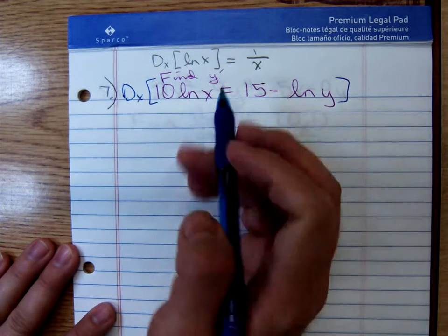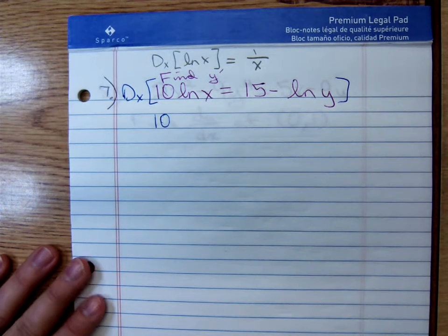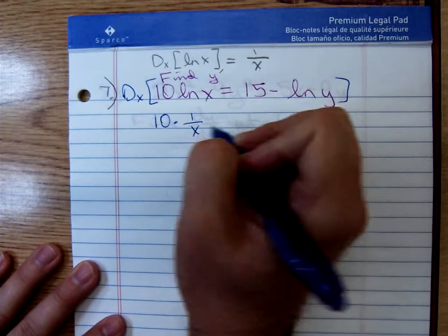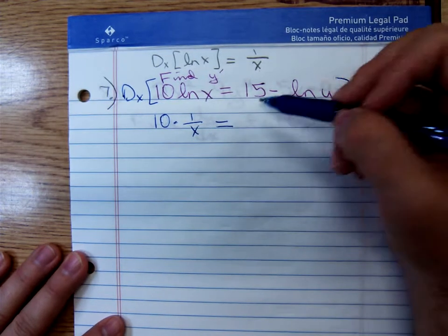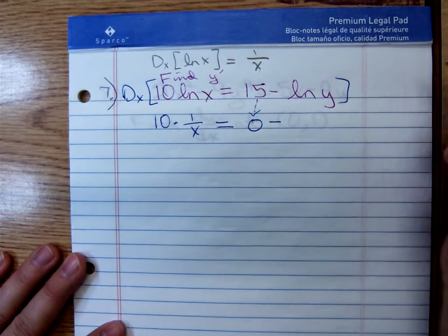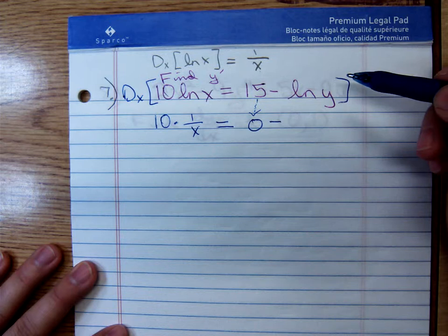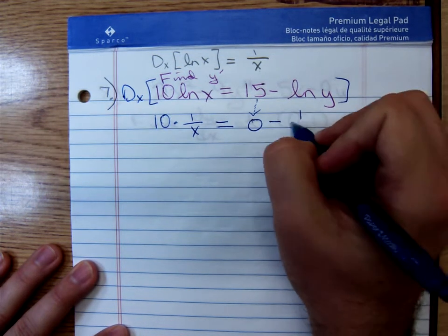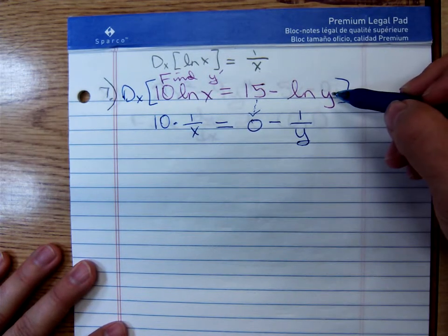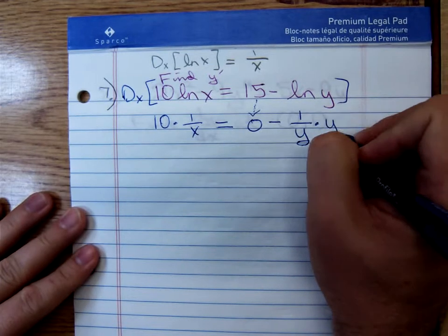So, the derivative of 10 lnx. You just bring down the 10, the way we did when we were differentiating natural logarithmic functions. Multiply it by the derivative of lnx. And the derivative of lnx is just a 1 over x. Equals the derivative of 15. We know what that is. That's a 0. That's an arrow I've drawn there. minus, now the derivative of lny. Well, differentiate that as if it were lnx. It'd be a 1 over the variable y. But then y is representing an unknown function. So, once you differentiate the term containing y, you then multiply by y' prime.